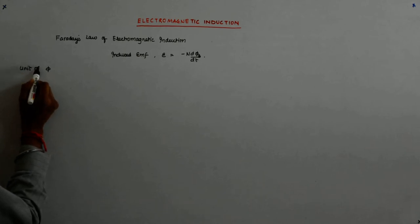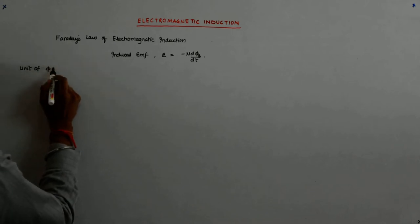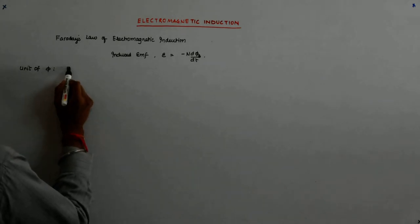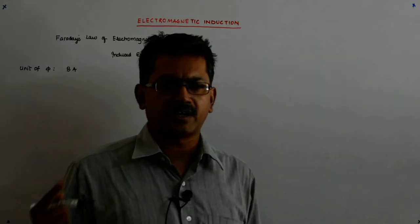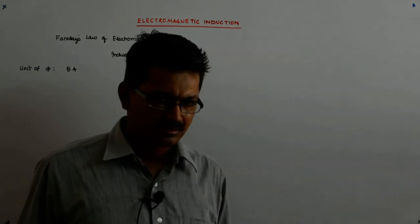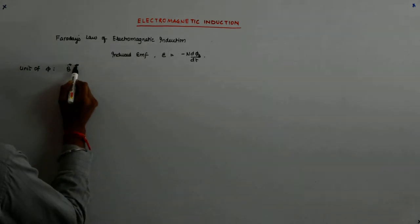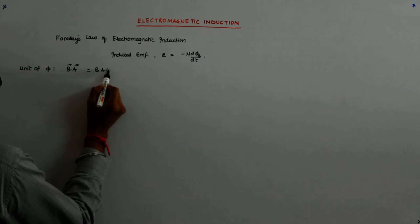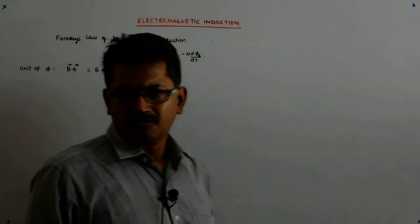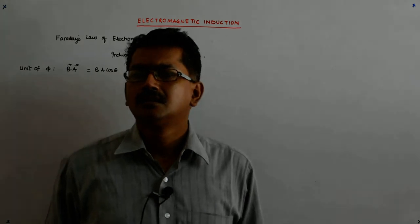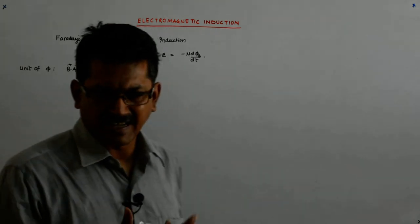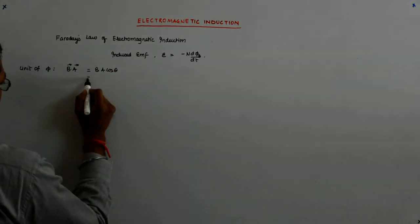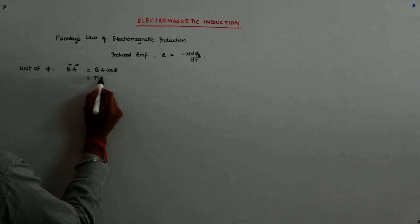Now, what is its unit? Dimensionally it is B·A, so B into A into cos theta. Cos theta has no unit because it's a trigonometric ratio of two sides of a triangle. So the unit is Tesla meter square.